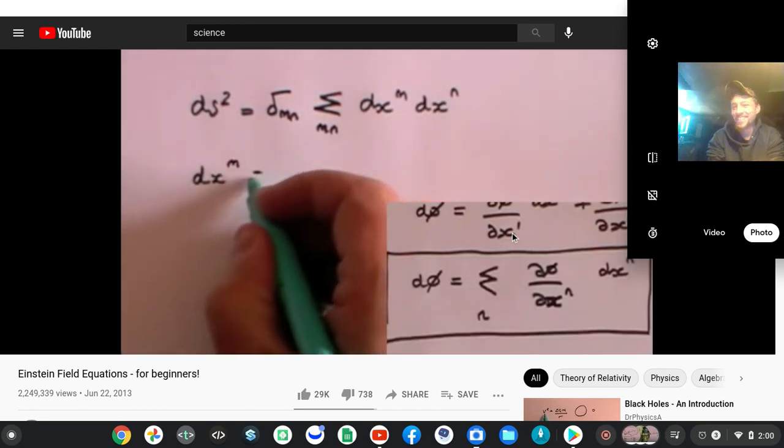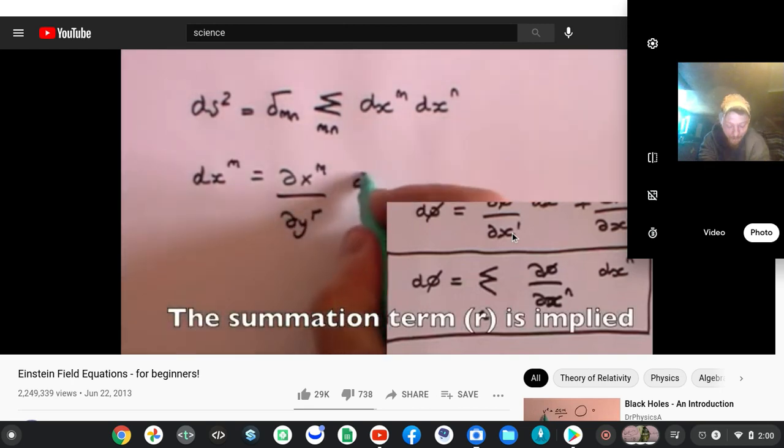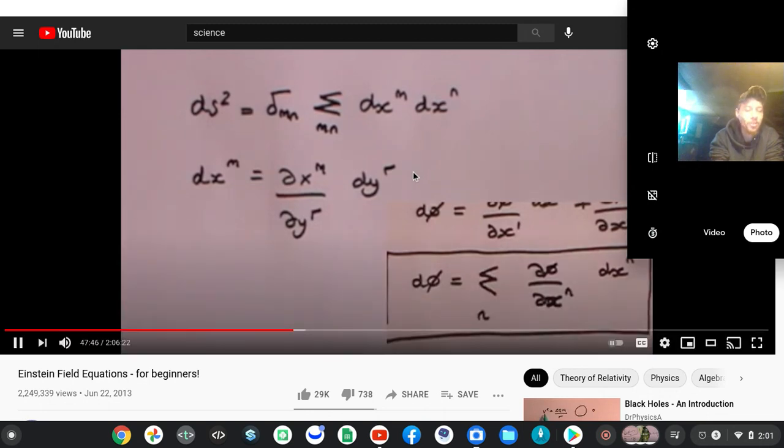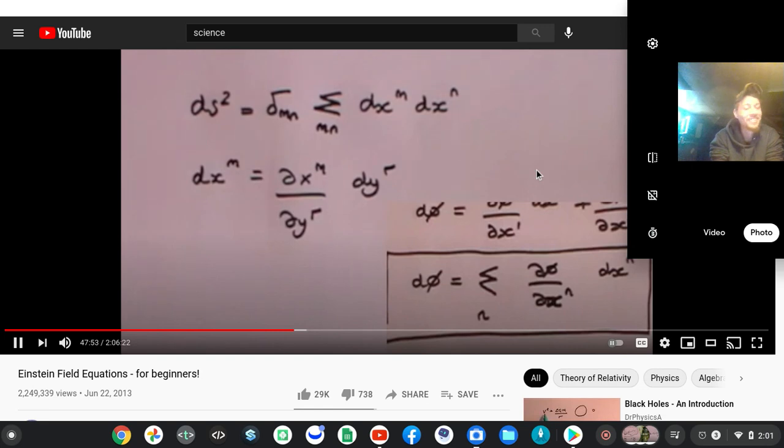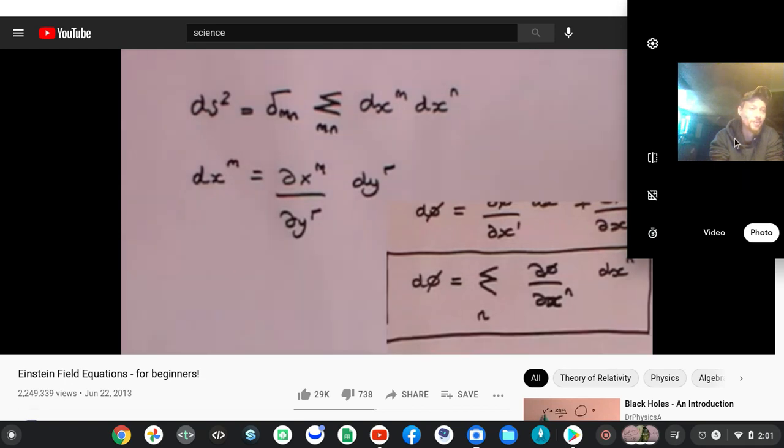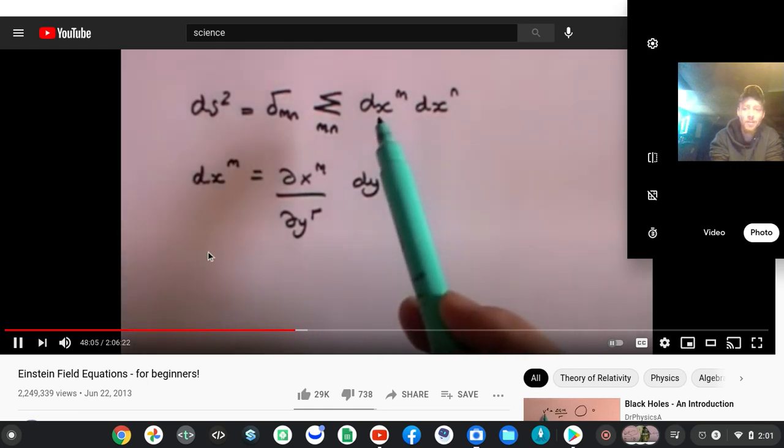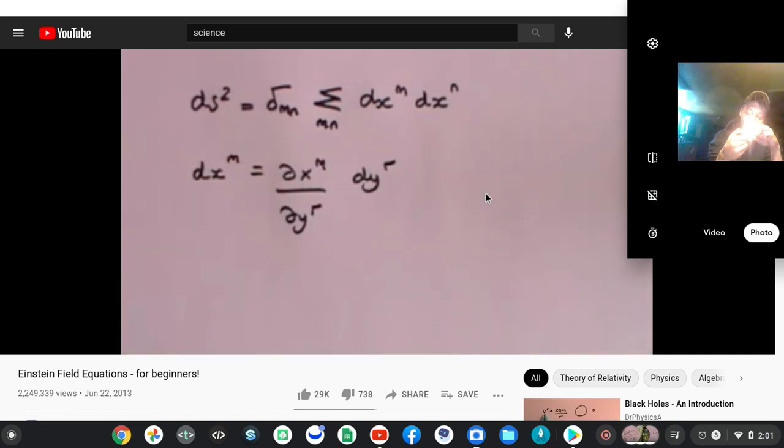I'm going to rewrite that in a slightly different form. I'm going to say that dxm is equal to dxm by dy r times dy r. I've used r and I've changed round the x and y. So now I'm going to take the value of dxm which is from equation 1 and substitute it in this equation here, and then I'll do the same for dxn.